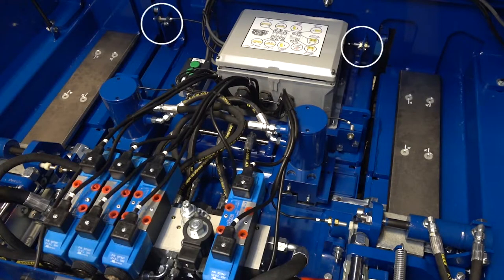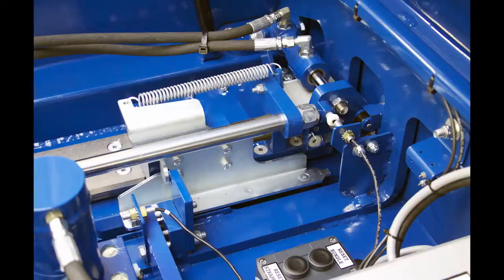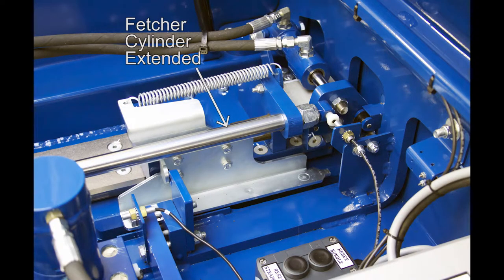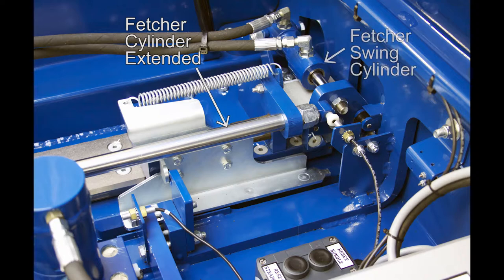Then there are two fetcher out reed switches which detect when the fetches are fully extended and the fetcher swing cylinders are fully extended to grab the strapping from the strap guide arm fingers, as shown here.